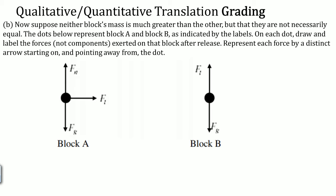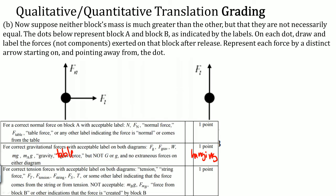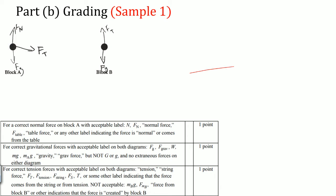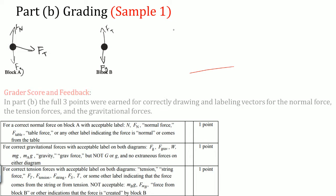The correct diagram shows: for the block on the table — force gravity down, force normal up, force tension to the right. For the hanging block — force gravity pulling it down and force tension going up. The three point distributions are for: a correct normal force on block A (labeled N or FN), a correct gravitational force (not just g or little g), and a correct tension force. A student diagram with correct arrows and labels earns all three points.